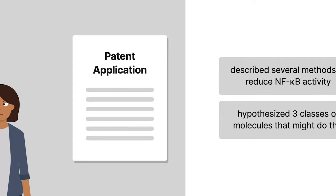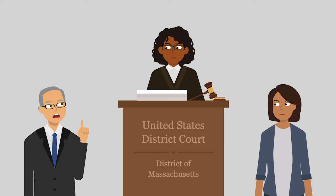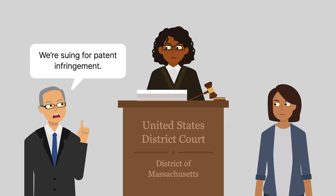Eli Lilly manufactured two drugs that worked by reducing NF-kappa-B activity. In 2002, Ariad sued Eli Lilly, alleging patent infringement. The district court ruled for Ariad.